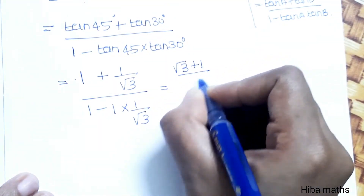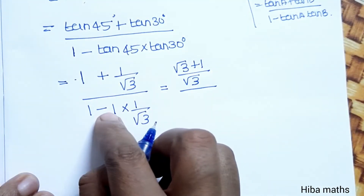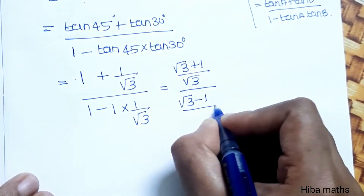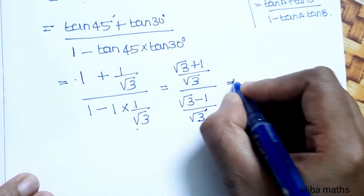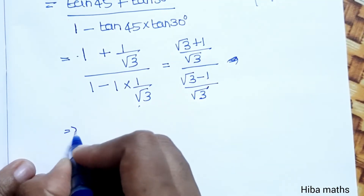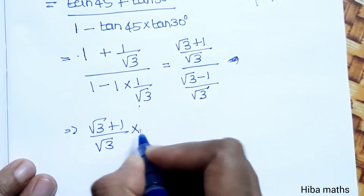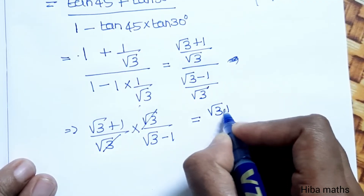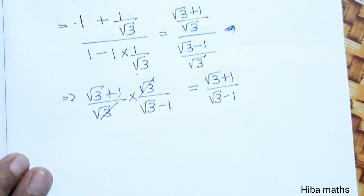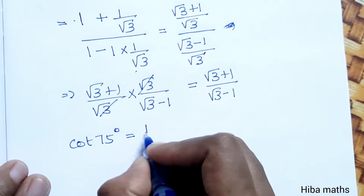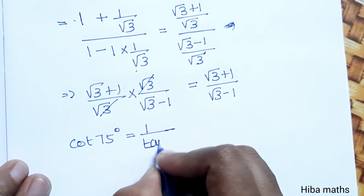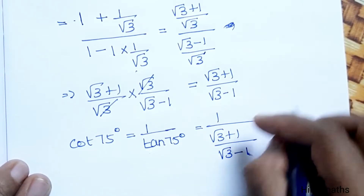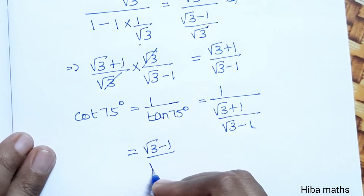So tan 75° = (√3 + 1) / (√3 − 1). The √3 terms cancel appropriately through the simplification steps, giving us the value of tan 75° as (√3 + 1) / (√3 − 1).